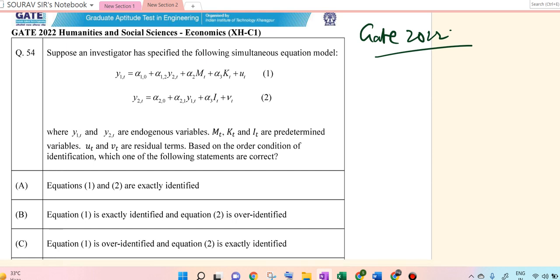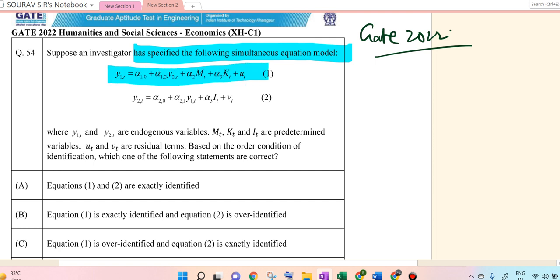Suppose the investigator has specified the following simultaneous equation system of alpha 1, y2, t and y1, t and i, t where y_t are the endogenous variables and these are the pre-determined variables with residual terms u_t and e_t. In this condition, which of the following is true?